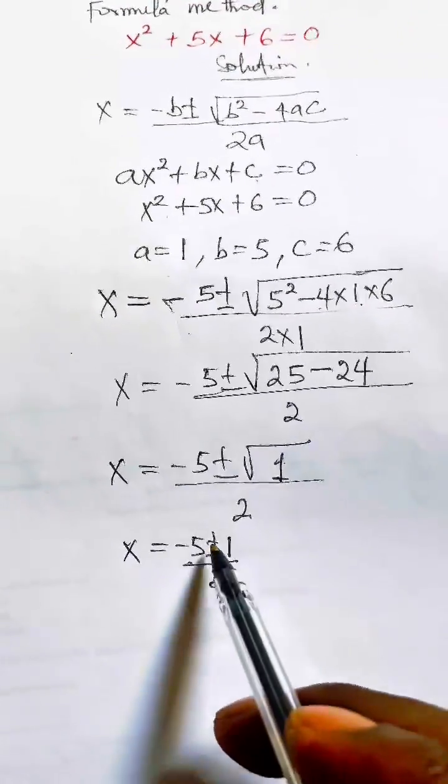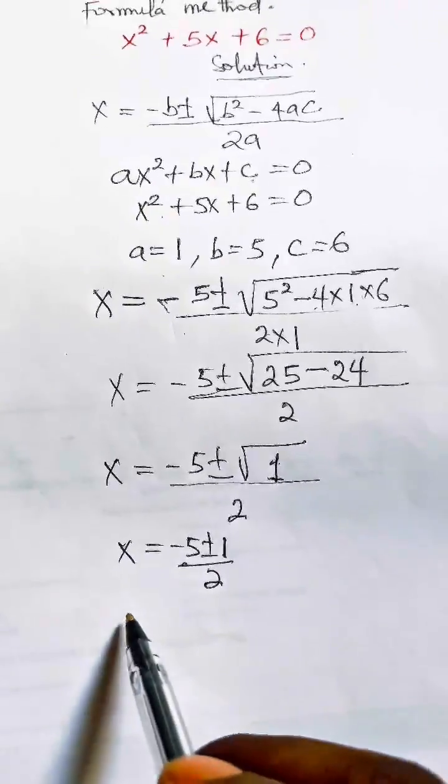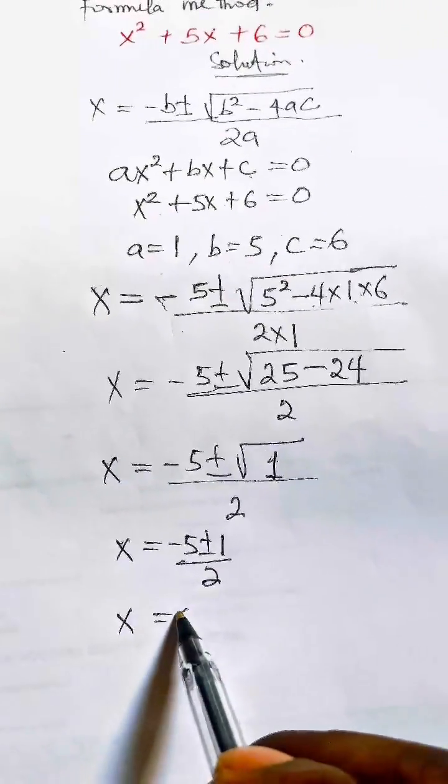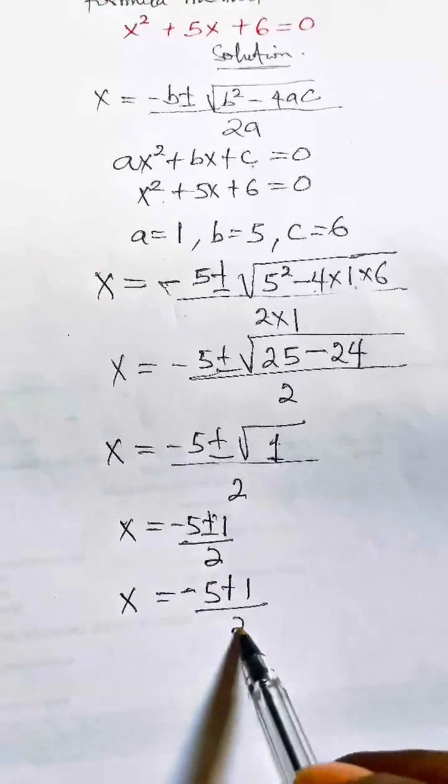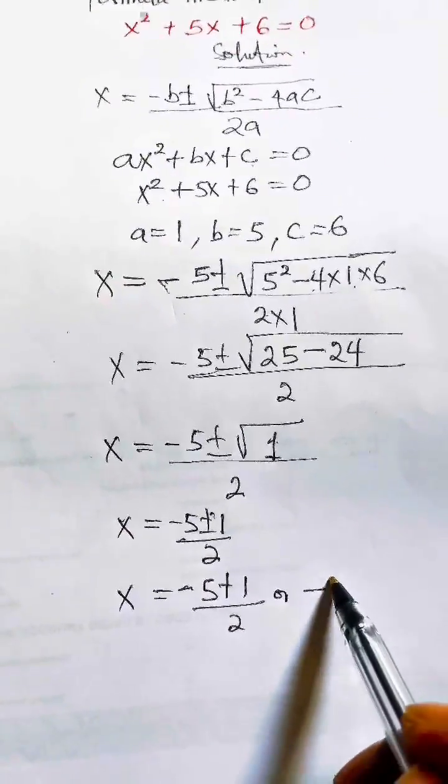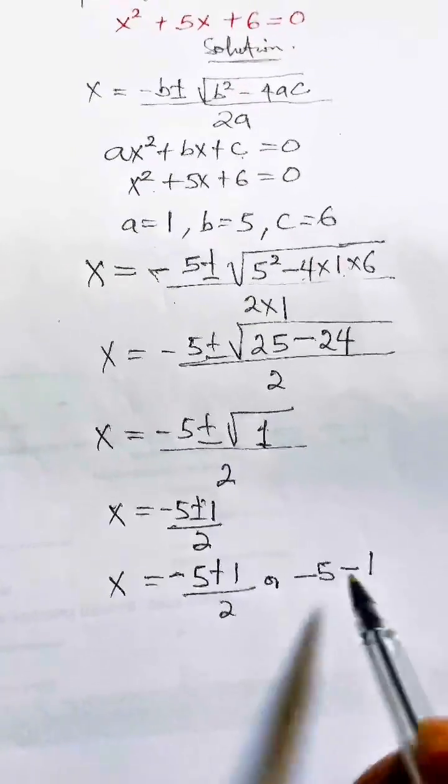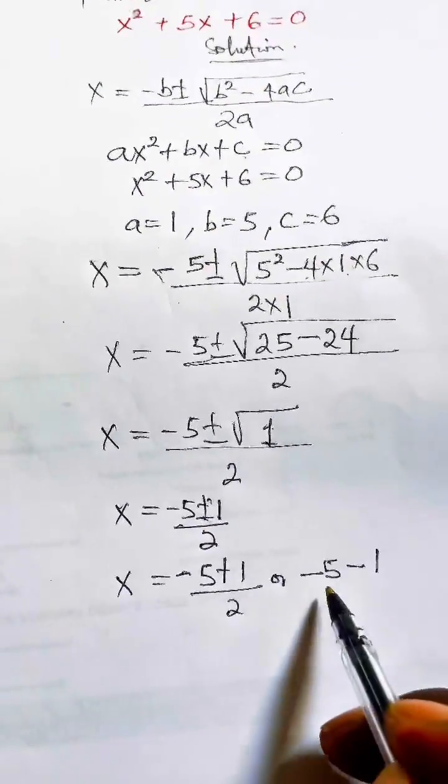What do you think this means? Anytime you say plus or minus, it means the value of x could be either minus 5 plus 1 over 2, or minus 5 minus 1 divided by 2.